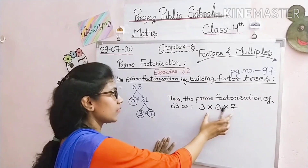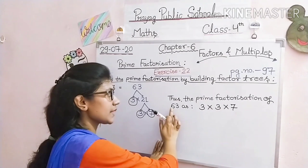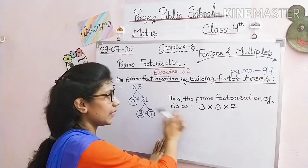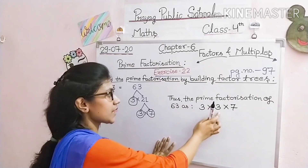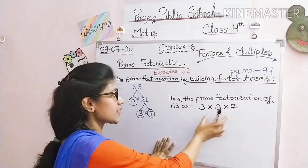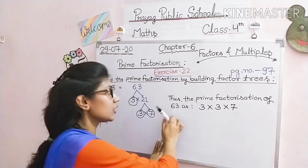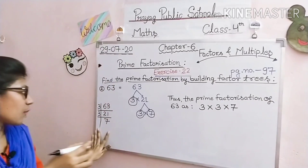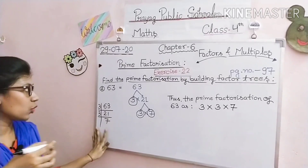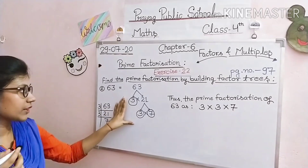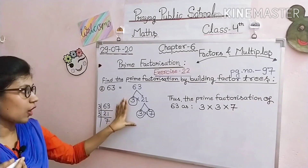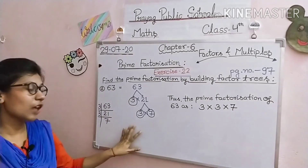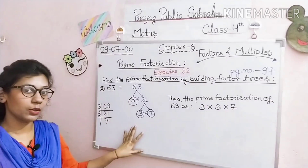क्योंकि जब इसे solve करेंगे तो result 63 ही मिलेगा: 3 × 3 = 9, 9 × 7 = 63. अगर आप rough में division method से कर लोगे तो factor tree method से solve करने में ज़्यादा time नहीं लगेगा और process सही होगा।